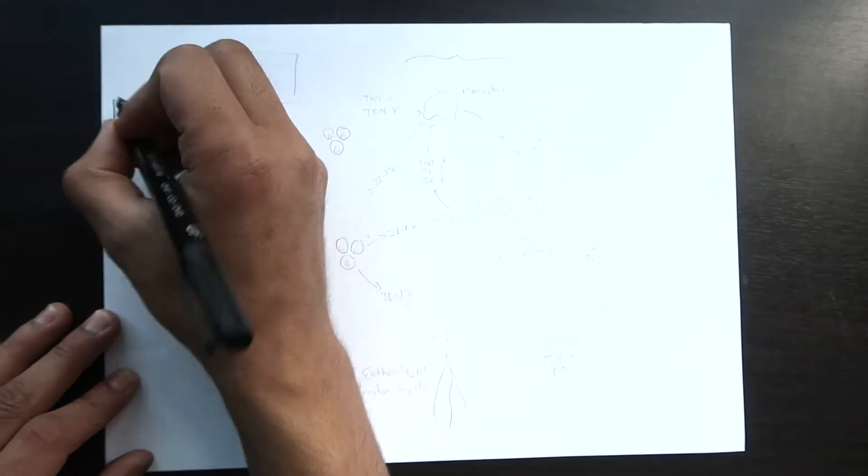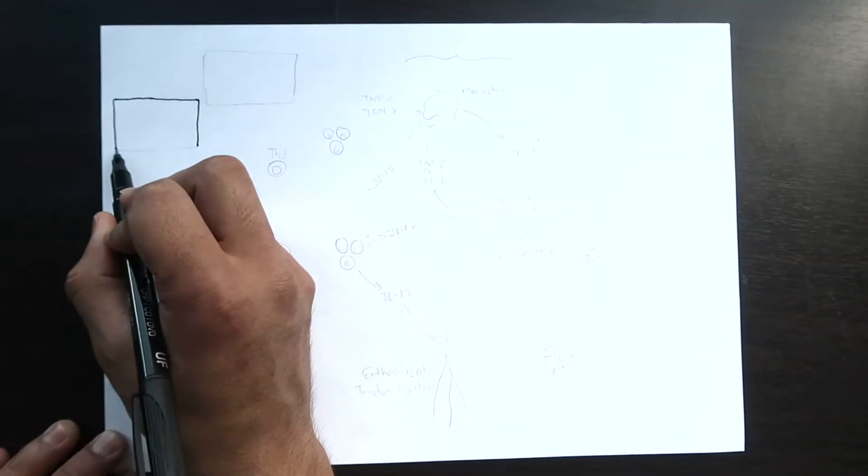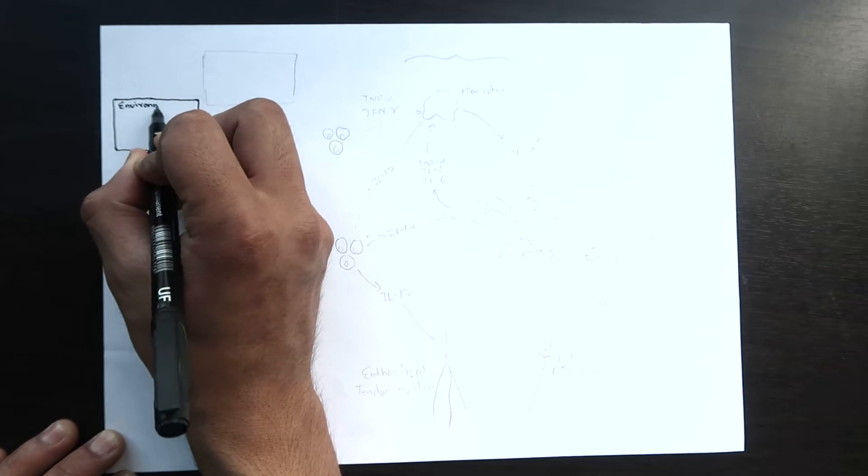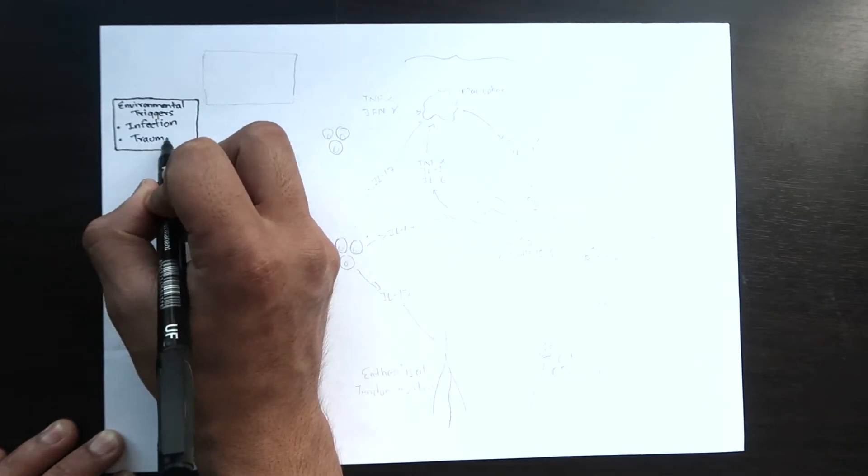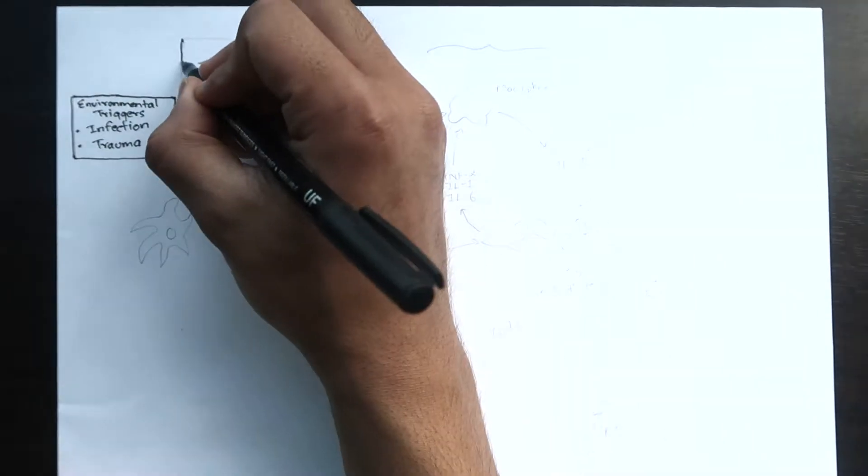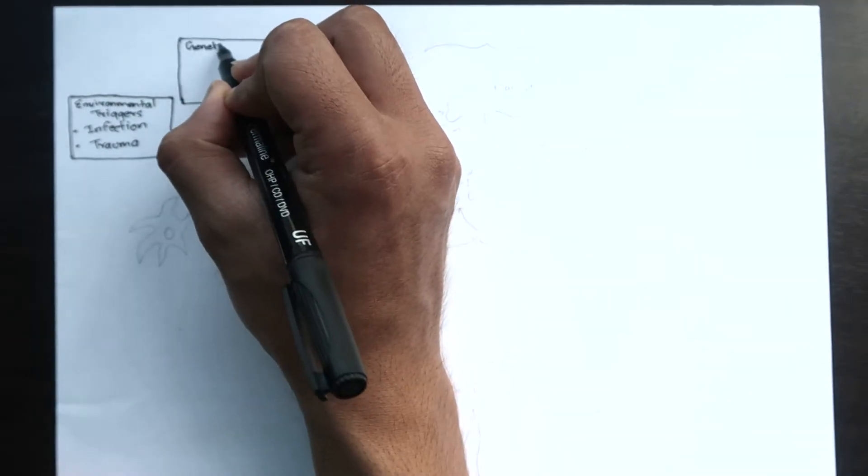Psoriatic arthritis is a form of arthritis that affects some people who have psoriasis, a condition that features red patches of skin topped with silvery scales. Most people develop psoriasis first and are later diagnosed with psoriatic arthritis, but the joint problems can sometimes begin before skin patches appear.